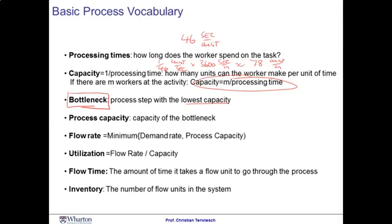Next, we define the flow rate as the number of customers going through the process per unit of time. There can never be more flow through the process than the capacity at the bottleneck. However, in situations with insufficient demand — such as off-hours, late at night, or early morning — the flow rate is defined as the minimum between demand and process capacity. We can then compute the utilization of a resource as the ratio between the flow rate and the capacity, measuring how much work a resource is currently doing versus how much it could do at full capacity.